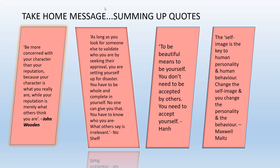Take-home messages for students. First: 'Be more concerned with your character than your reputation, because your character is what you really are, while your reputation is merely what others think of you' — John Wooden. Second: 'As long as you look for someone else to validate who you are by seeking their approval, you are setting yourself up for disaster. You have to be whole and complete in yourself. You have to know who you are. What others say is irrelevant' — Nick Shelf. Third: 'To be beautiful means to be yourself. You don't need to be accepted by others. You need to accept yourself.' And: 'Self-image is the key to human personality and human behavior. Change the self-image and you change the personality and the behavior' — Maxwell Maltz.